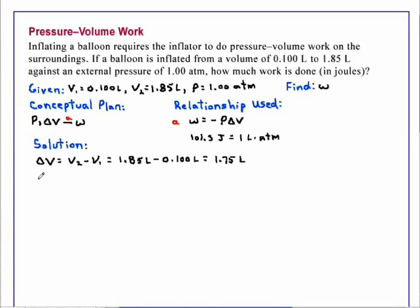The work, then, is minus the pressure times this change in volume. And that is minus 1.00 atmosphere times 1.75 liter is equal to a negative 1.75 liter atmosphere.